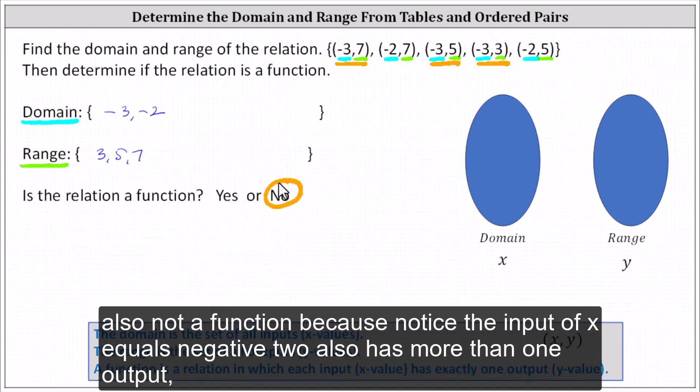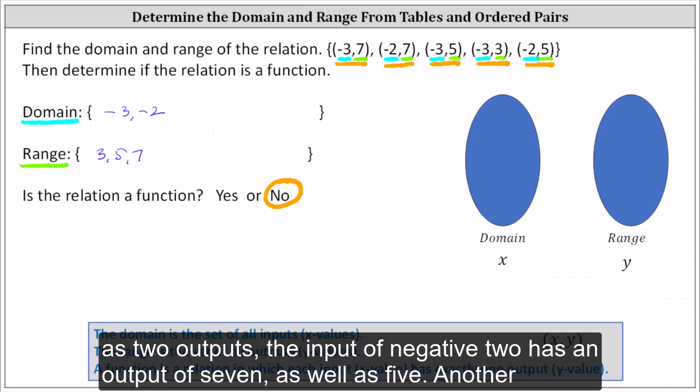It's also not a function because the input of x equals negative two also has more than one output — it has two outputs. The input of negative two has an output of seven, as well as five.